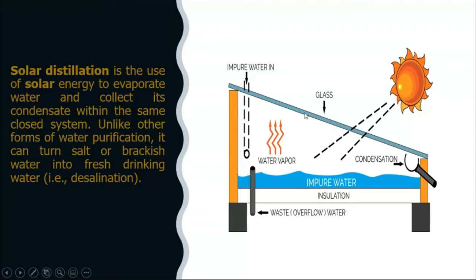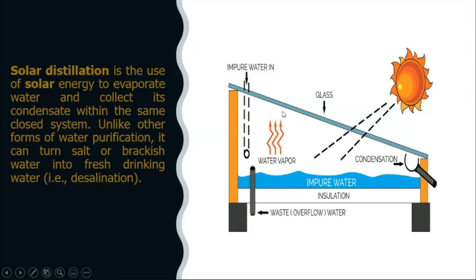Solar energy creates a greenhouse effect inside the glass cover — high-frequency radiation enters but cannot escape because of the wavelength change. This greenhouse effect increases the temperature inside; water evaporates and then condenses in the form of water vapor and is stored. Solar distillation is basically used in locations where salt water concentration is more.